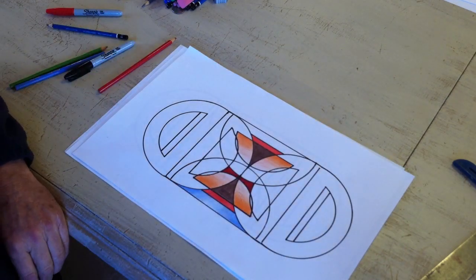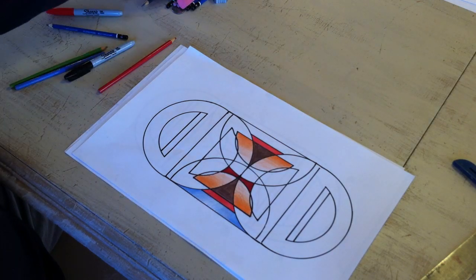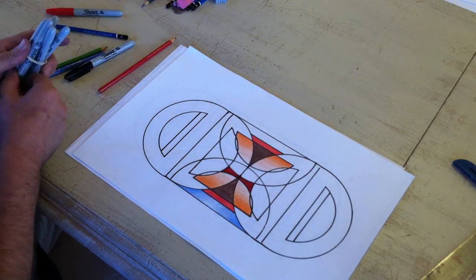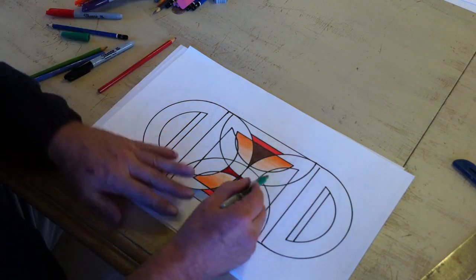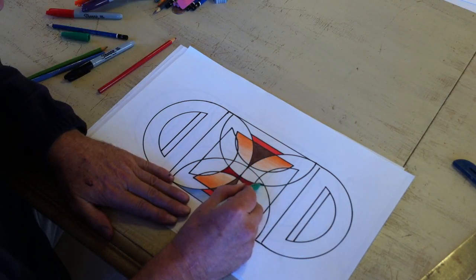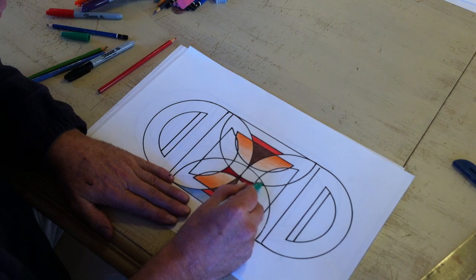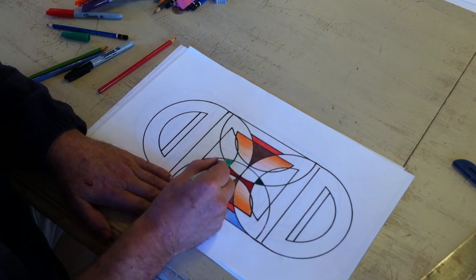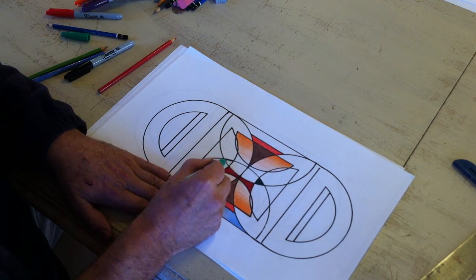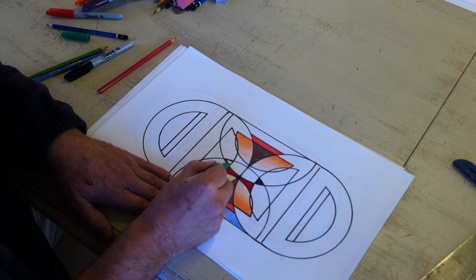If you use colored pencils and you choose to add value, make sure that your value scale goes from very dark to light. If you use markers, make sure that your markers are flat, and that you do not see any spaces or lines in your marker area. And the same thing with your colored pencil. So, everything should be very flat.